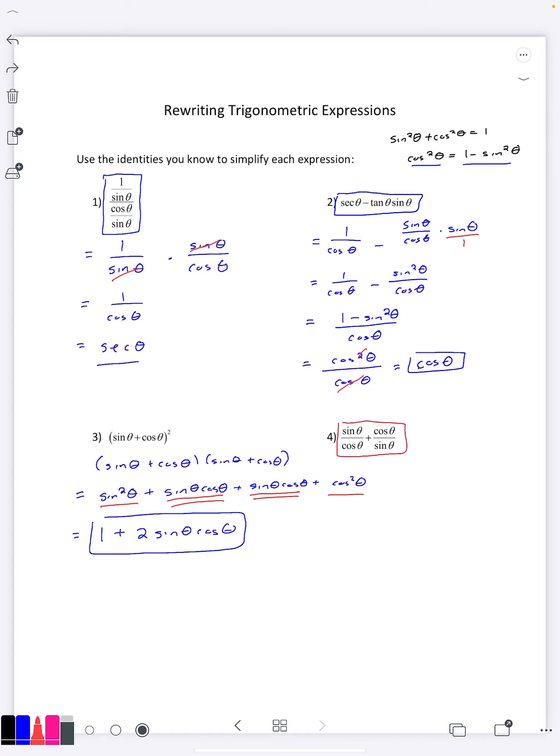We have two fractions that are being added but they do not have a common denominator. One of them has cosine theta, one has sine theta, so the LCD would be sine theta times cosine theta.